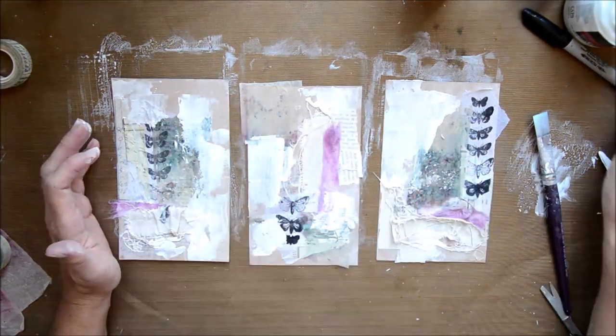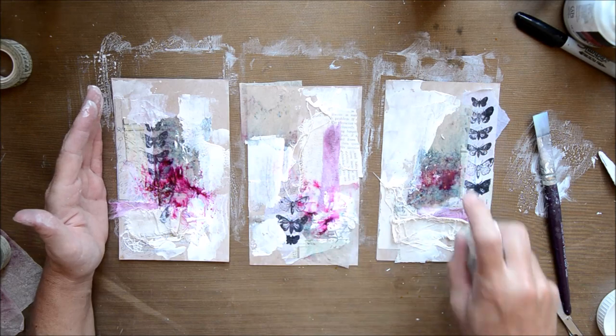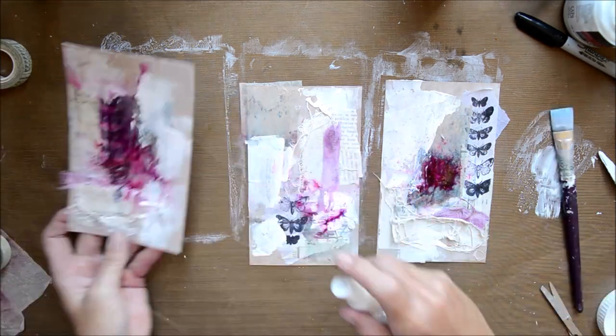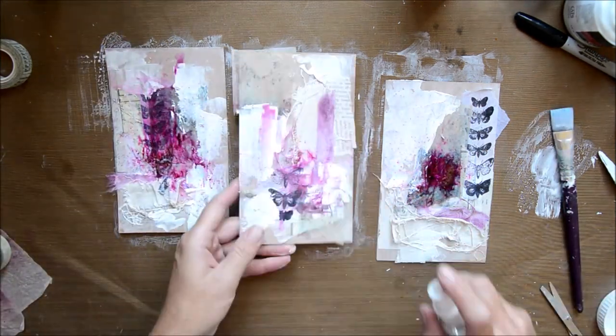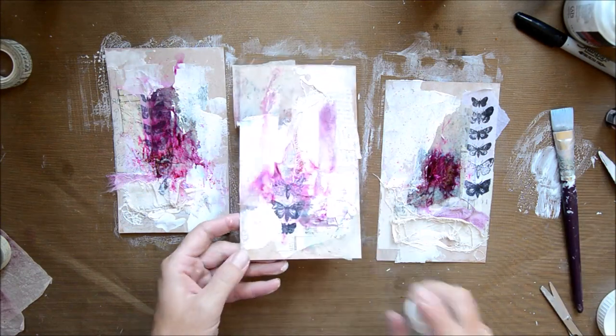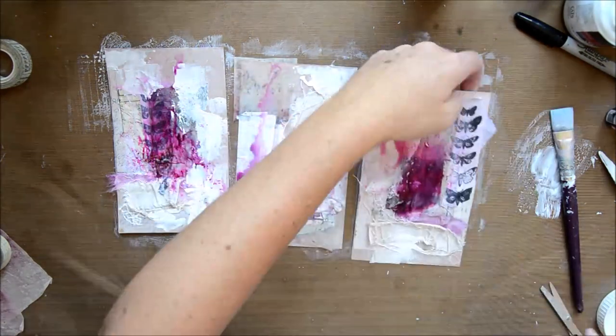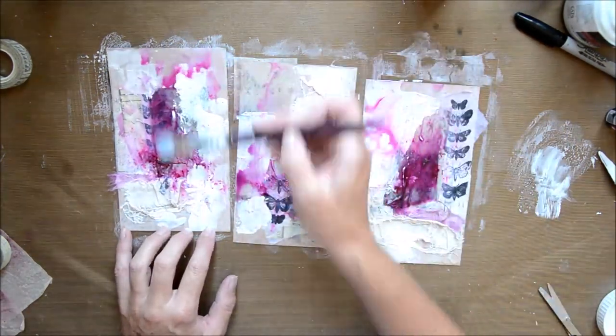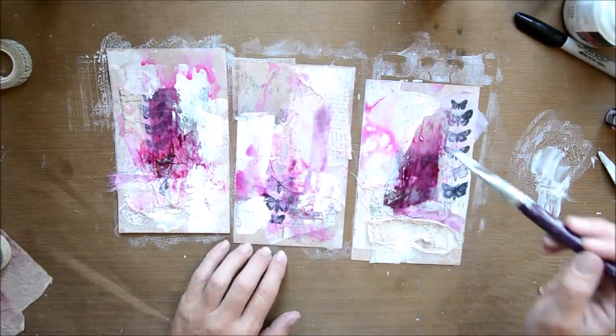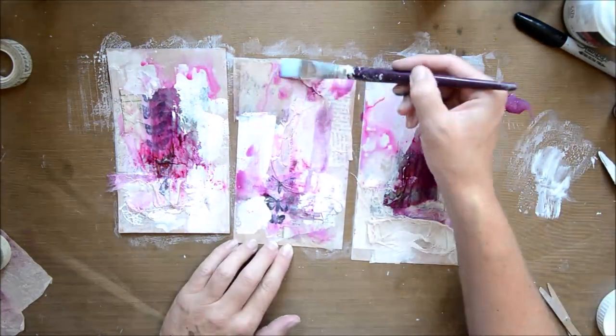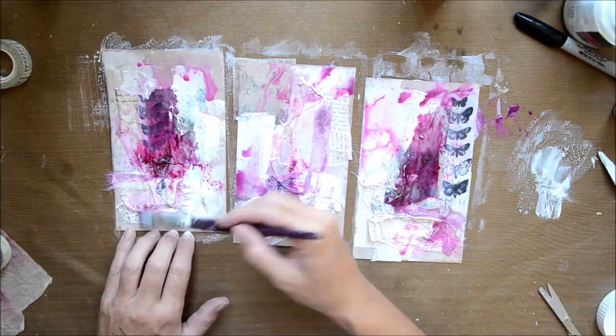I get out Lindy's Stamp Gang Magical Shaker in the Magnolia Magenta Gold, which is a really lovely color. I put them on and then in a minute I'll drop on a little bit of the black antiquing cream and just spritz it out with water as well.